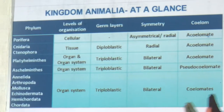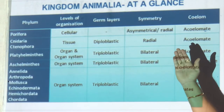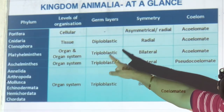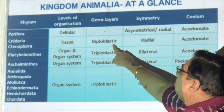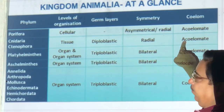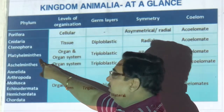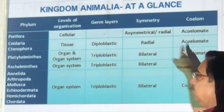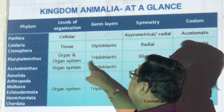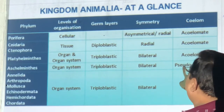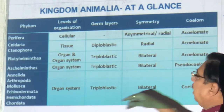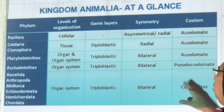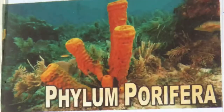Let's look at the summary chart. Porifera show cellular level of organization, are asymmetrical or radial, and have no coelom. Cnidaria and Ctenophora have tissue level, two germ layers, radial symmetry, and no coelom. Platyhelminthes and roundworms have organ and organ system level, triploblastic (three germ layers), bilateral symmetry — with no coelom in flatworms, and false coelom in roundworms. From Annelida onwards: organ system, three germ layers, bilateral, and true coelom.